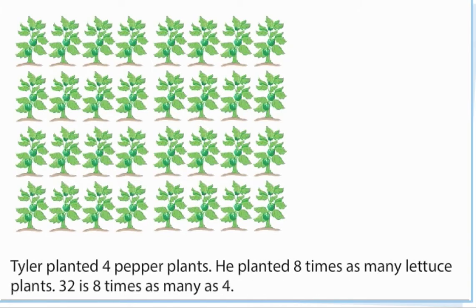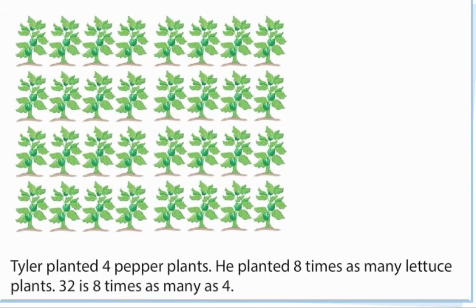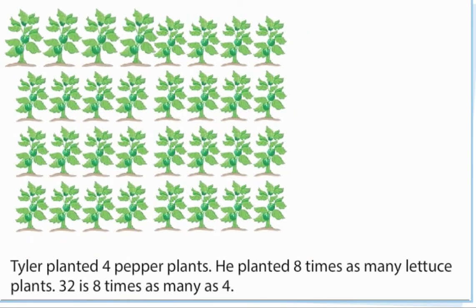Tyler planted four pepper plants. He planted eight times as many lettuce plants. 32 is eight times as many as four.